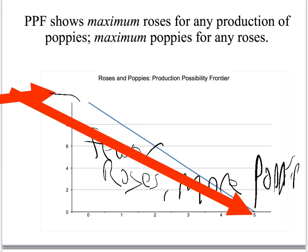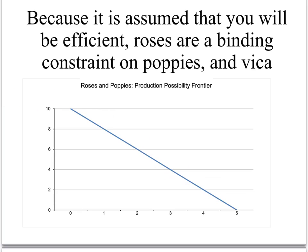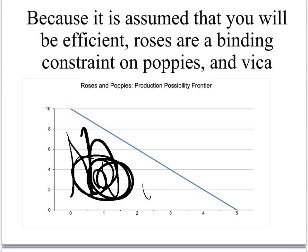You can't have more of both. Because we assume that you're going to be efficient, you're never inside the frontier — that would be wasteful. If you're at, say, two and four, you could have two and six, or four and three. Why wouldn't you? So we assume that you're always out on the frontier.